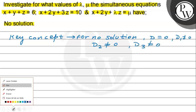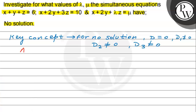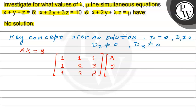The equations can be written as Ax equals b. The coefficient matrix A is: row 1 is 1, 1, 1; row 2 is 1, 2, 3; row 3 is 1, 2, lambda. The constant vector b is 6, 10, mu.